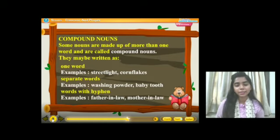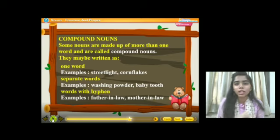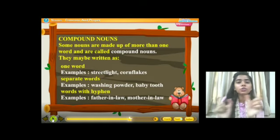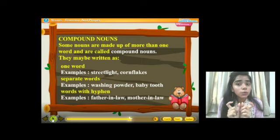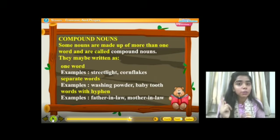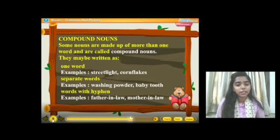Then, separate words. Example: washing powder. Washing and powder — if I say just 'washing', I can wash anything: clothes, utensils. So it is making a different meaning. But if I add 'powder', then together it becomes a noun — that is, 'washing powder' is a compound noun. Then, baby tooth. We have baby tooth — so these two separate words are joined together, forming a compound noun.